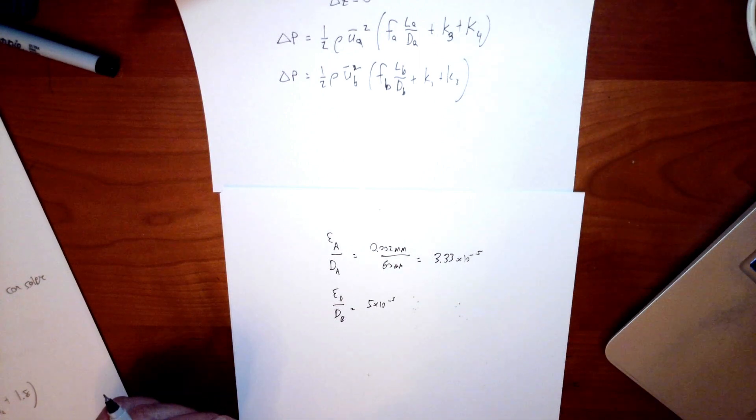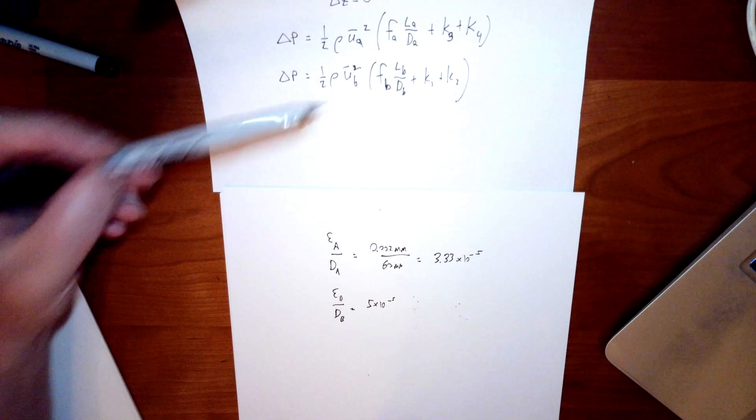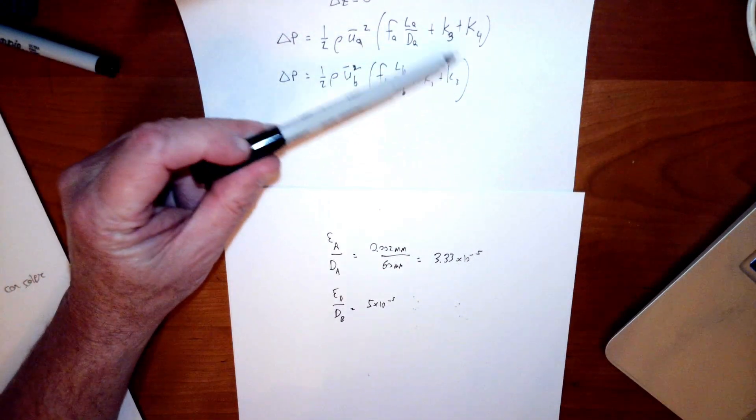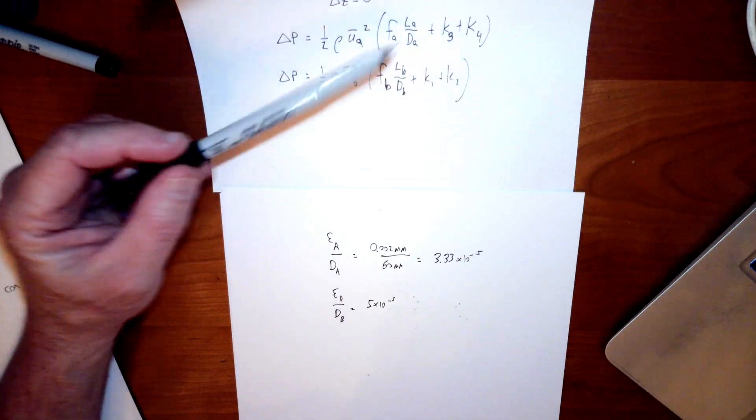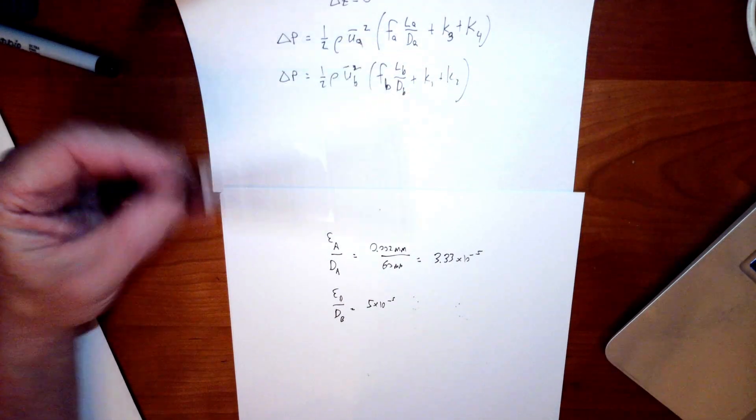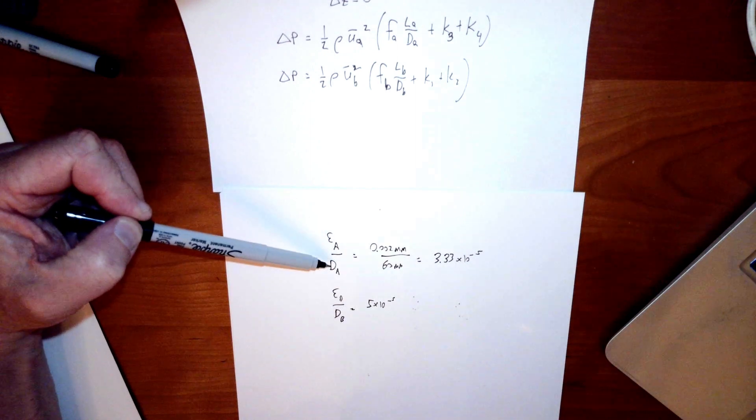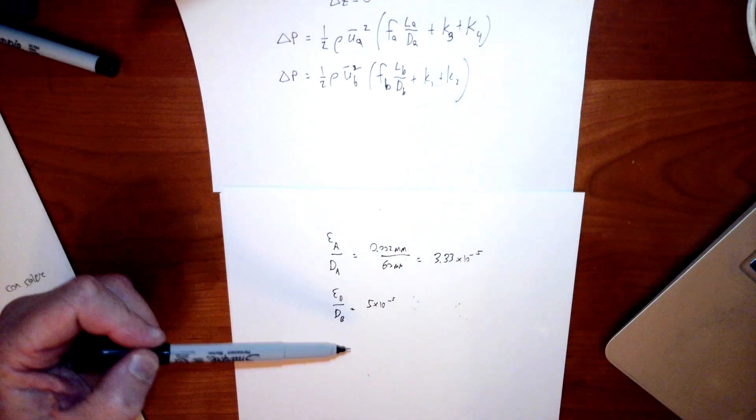Okay, in order to solve the problem, we're going to have to find some F values here, FA and FB. We were given the K values, so that's all set, but we need Fs. And in order to find Fs, we know we need epsilons over Ds, and we're also going to need Reynolds numbers at some point. But anyway, we need the epsilon over Ds.